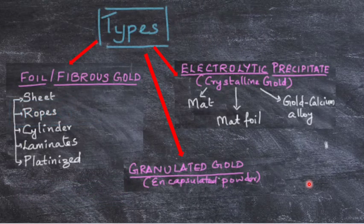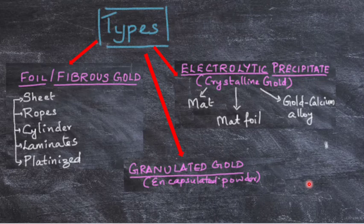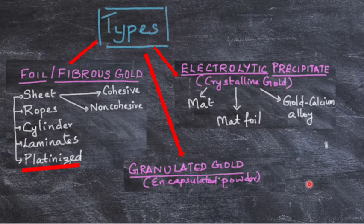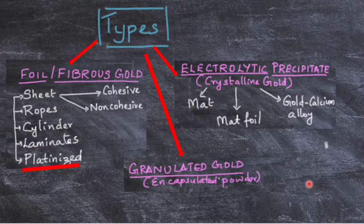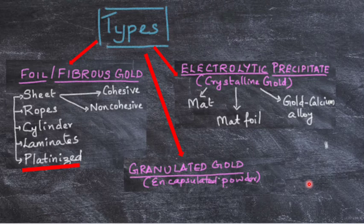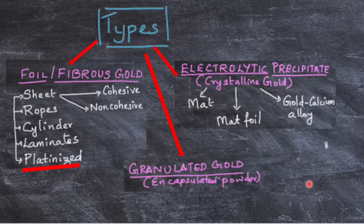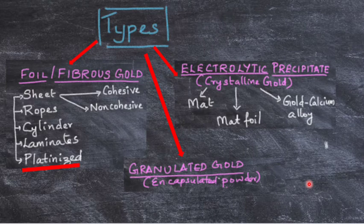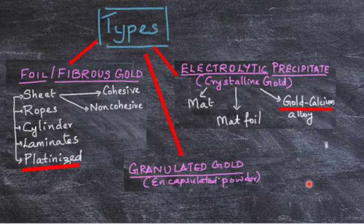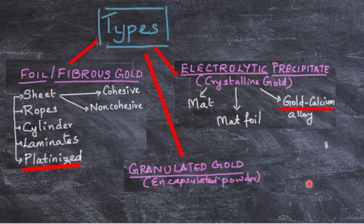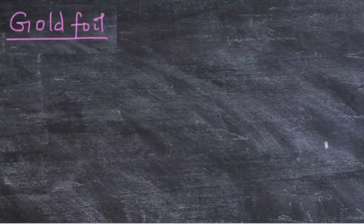What are the types of restorative gold filling materials? It can be foil or fibrous gold—sheets like cohesive or non-cohesive. It can be in the form of rope cylinder, laminates, or it can be platinized. It can be granulated gold, like powdered gold or encapsulated powder. It can be an electrolytic precipitate, or it can be crystalline gold, which is further divided into mat, mat foil, or gold-calcium alloy. Most types are made of 99.9% pure gold, except platinized and gold-calcium alloy.